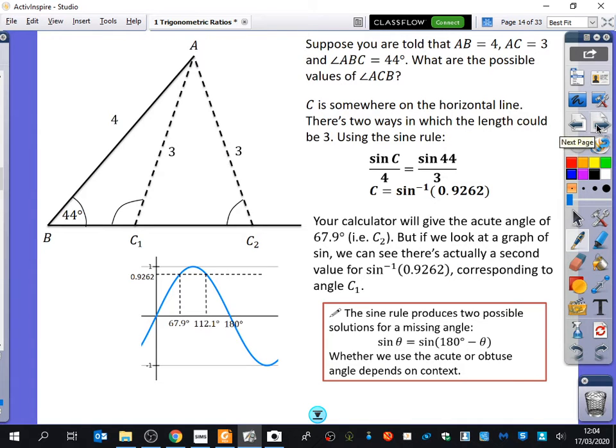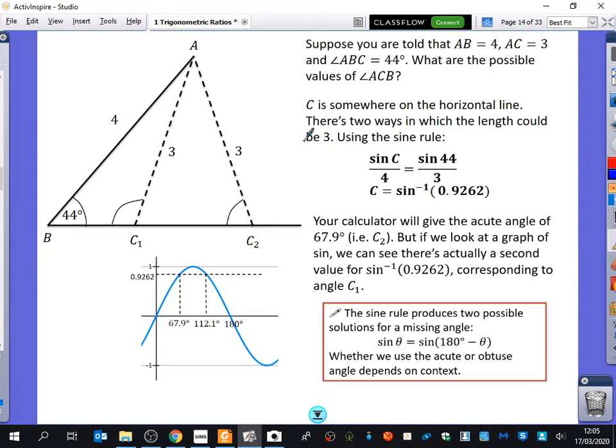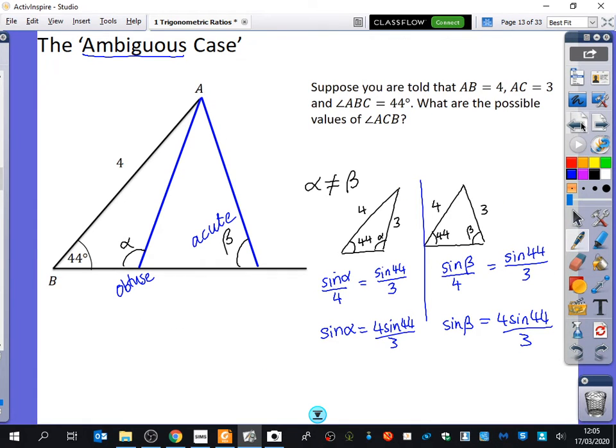So here is kind of what we were just talking about on that previous page. We drew in these two extra lines and we had these two different angles that we had here. We called them alpha and beta and here I've just called them C. So I've said C is somewhere on the horizontal line and there's two ways which the length of the line could be 3. Using the sine rule, you come up with that C is equal to the inverse sine of this.